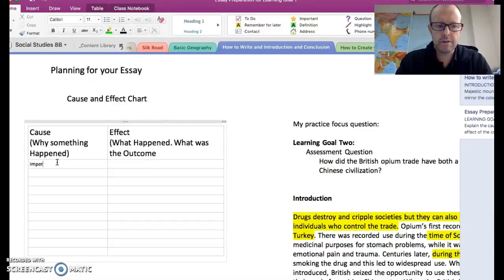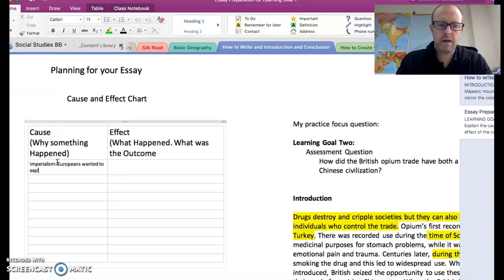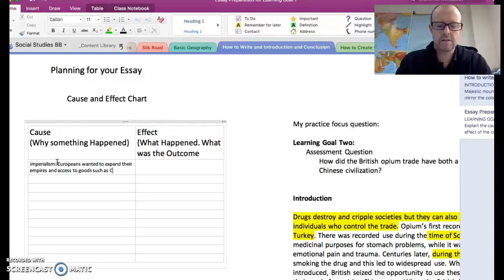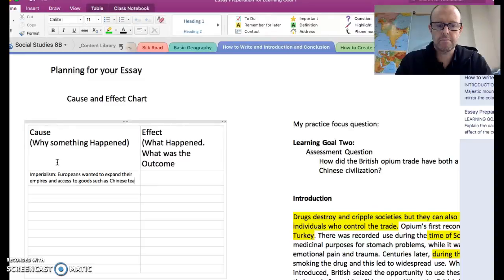So I'm going to write down imperialism here. So Europeans wanted to expand their empires and access to goods such as Chinese tea. Now, what happened? What was the outcome of that? This example led to the Opium War. So wars, I'm going to put one and two.